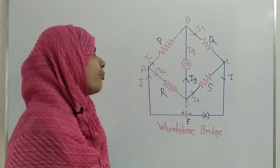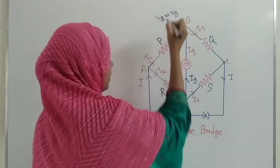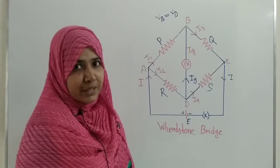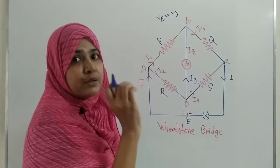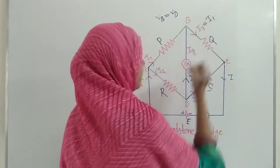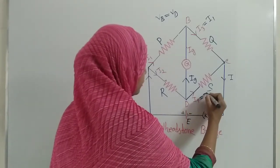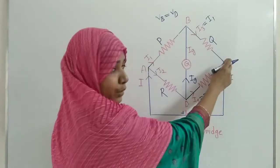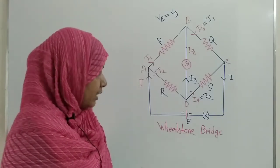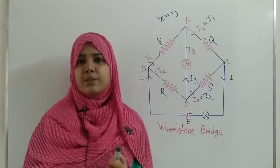Students, now consider that the potential of point B and point D are the same, that is VB is equal to VD. Now what will happen? You know that when there is no potential difference between the two ends of a resistance, then there will be no flow of current. So in that case, when I1 current comes to point B, the total I1 will go through resistance Q — that means I3 will be equal to I1. And similarly, when I2 comes at point D, as there is no potential difference, total I2 current will flow through resistance S and come at point C. After that, the I amount of current will come to the negative terminal of the cell. So students, when these two terminals have the same potential, in that case this Wheatstone bridge is considered to be in equilibrium position.